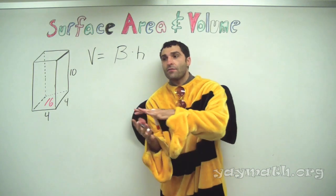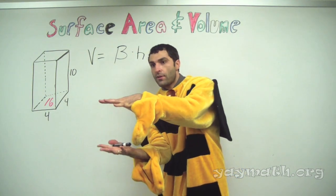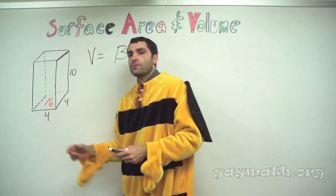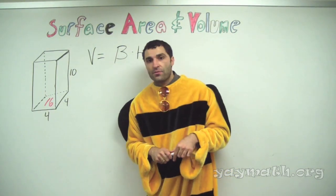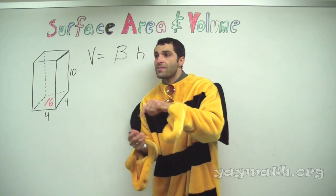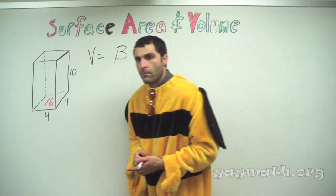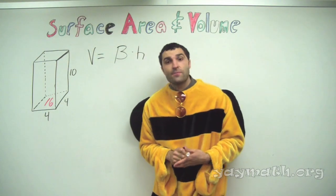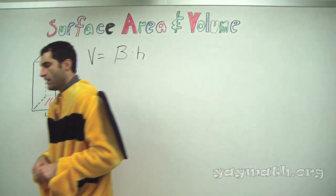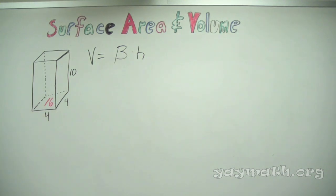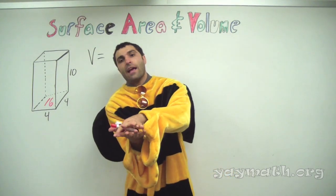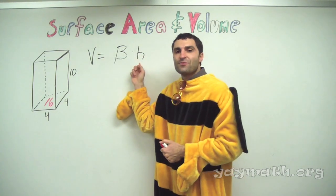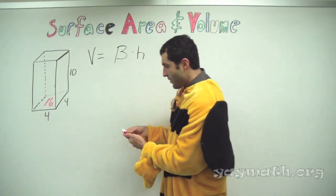For any prism — remind me the definition. Same shape, pulled apart. So that could be a triangle at the base. Pyramid is not a prism. A prism has the same shape top and bottom: rectangular prism, triangular prism. And a cylinder? A cylinder has the same attributes as a prism — the bottom base is a circle, and it uses the same formula. That's awesome.